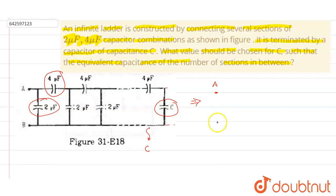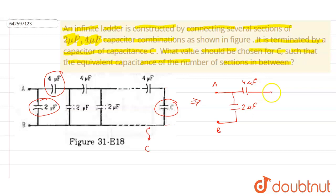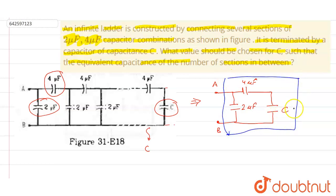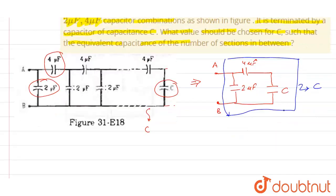Now if we redraw this figure, we can say that this is point A and this is point B. Here we have a two microfarad capacitor, and here we have a four microfarad capacitor. The whole network or section is being terminated by this capacitance C. If we want to terminate this section, then the capacitance of this section will be equal to C.